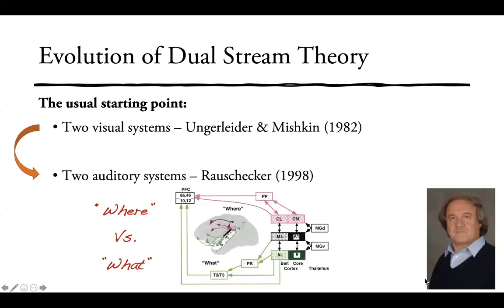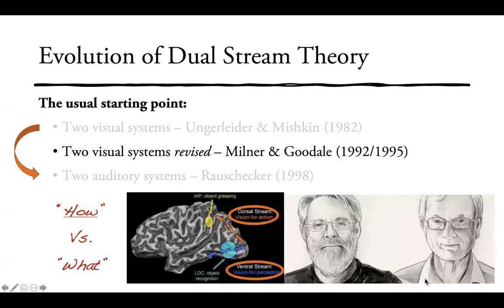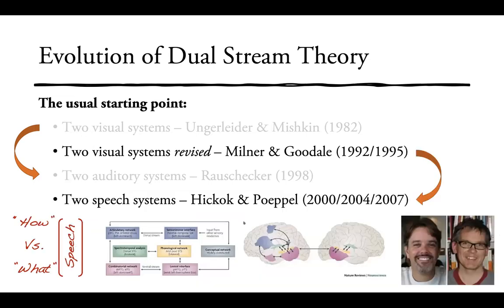In the late 90s, Joseph Rauschecker proposed a similar what-where division in auditory cortex. Interspersed between these two was a revised proposal by Milner and Goodale for the two visual systems model. The what stream stayed the same, but the dorsal stream was reinterpreted as a 'vision for action' stream — that is, how to interact with objects.